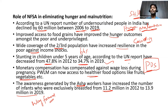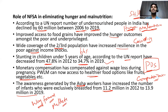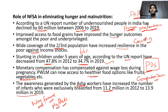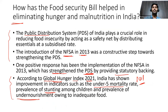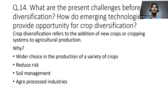Millets are an excellent source of micronutrients — providing fiber, vitamins, and minerals. Including millets in the PDS system is one of the key ways to achieve nutritional security in India.